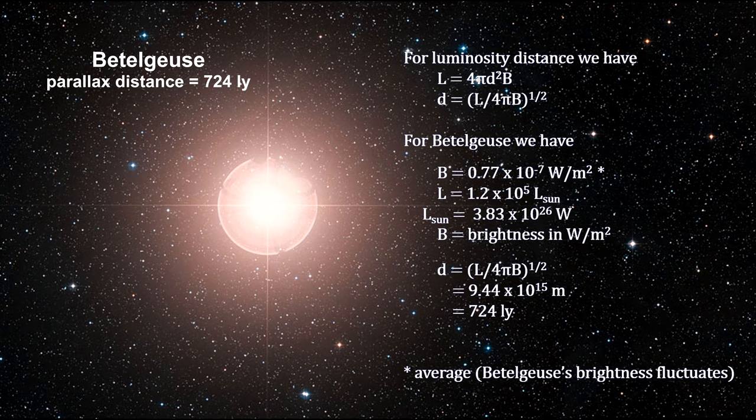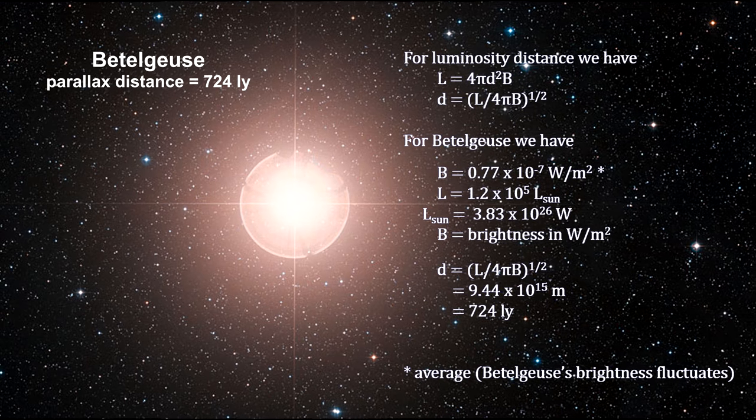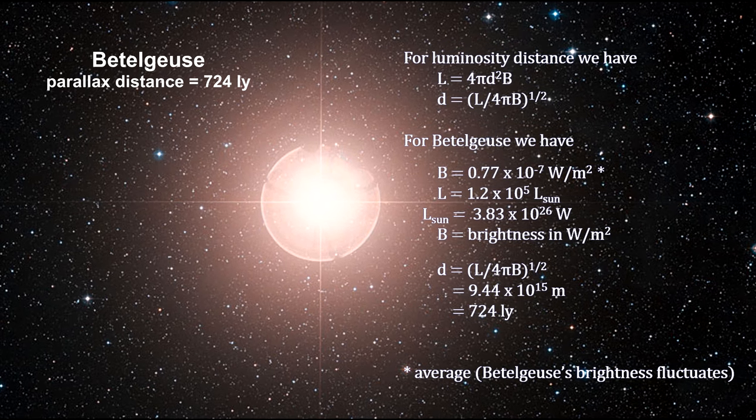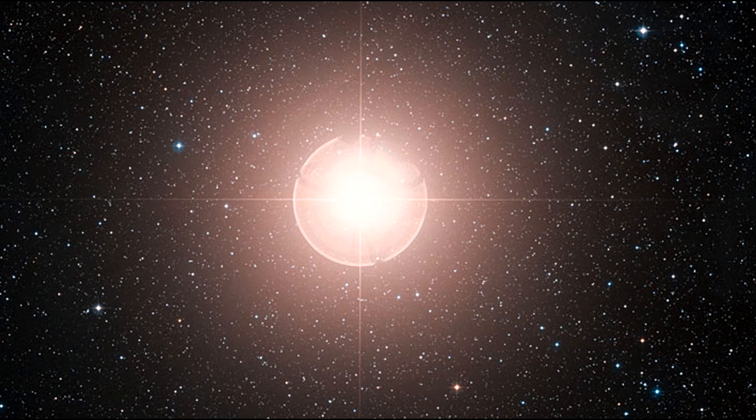If stars everywhere behave like the stars in our neighborhood, then the HR diagram can show us how far away they are. Astronomers call this technique spectroscopic parallax, but we'll just stick with HR diagram.